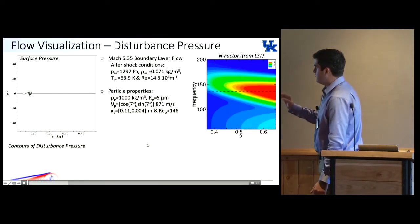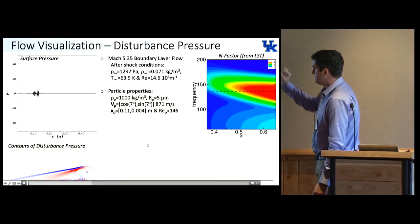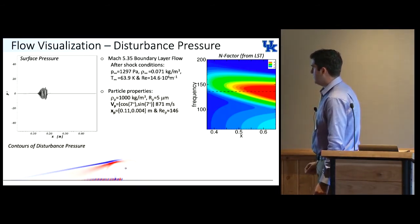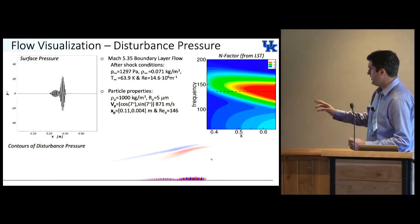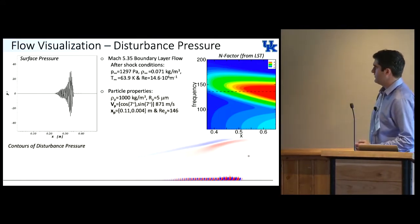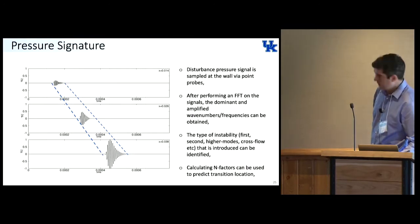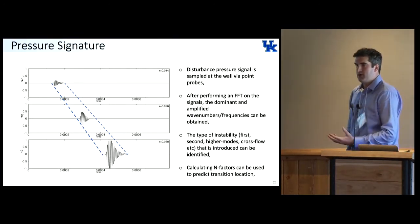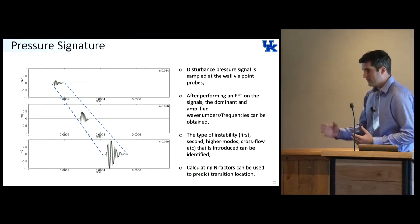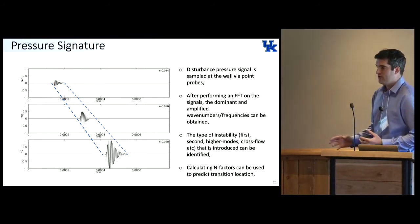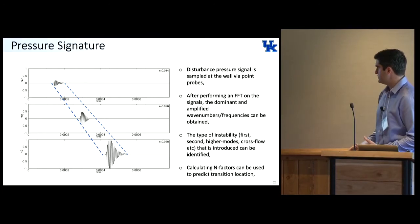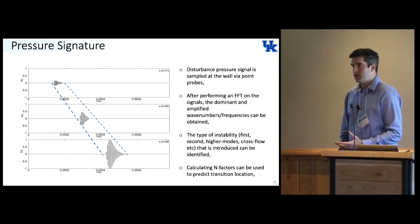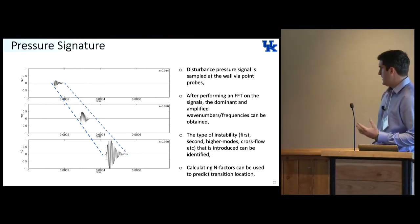What we do is with point probes, we compute the pressure signal at the wall. We extract these and record the pressure signal and we can see the second mode and the particle as it's convecting downstream. Now that we have these pressure signals, we perform an FFT on them. From this we can extract amplitude plots and N factors and identify the wave numbers and the frequencies that become amplified subject to the disturbance. The type of instability is first mode or second mode or cross flow, and then use our N factors to help predict the transition location.